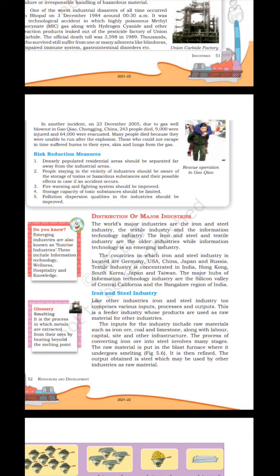Iron and steel industry comprises various inputs, processes and outputs. It is a feeder industry whose products are used as raw material for other industries. Inputs include raw materials such as iron ore, coal and limestone, along with labour, capital, site and other infrastructure. The process of converting iron ore into steel involves many stages — the raw material is put in the blast furnace where it undergoes smelting, then refined. The output is steel, which may be used by other industries as raw material.